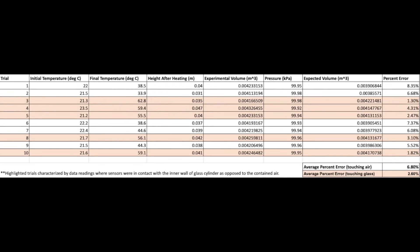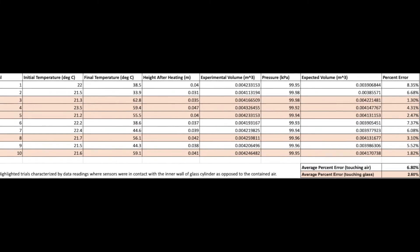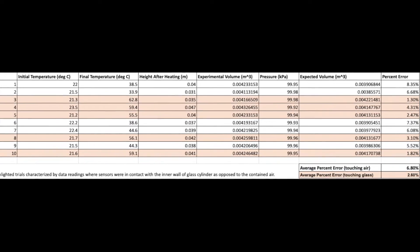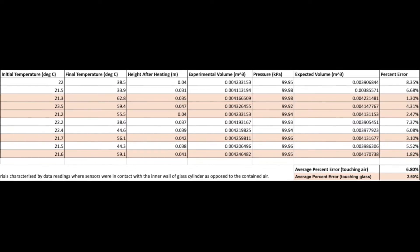The results show that bubbles are an accurate way of demonstrating Charles' Law. The data shows two sets of trials, one where the temperature reading was taken with a sensor in contact with the glass, and one where the air within the cylinder was measured. Both sets show high accuracy as shown by the low percent errors.